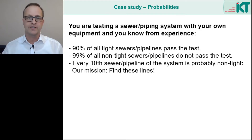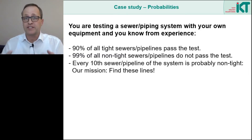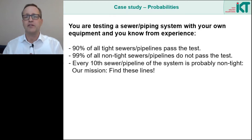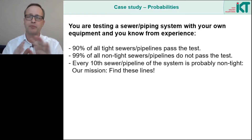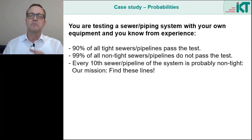Here comes the first example. Imagine the tester hands you the test result 'leaking' for a pipeline, and you want to assess how far you can trust this result. You think: the test circumstances are not simple — inserting a shutoff packer can sometimes go wrong, and who knows how the venting worked out. With a little goodwill, about 90% of tight sewers and pipelines will probably pass the test. The other way around, you are more confident: if a leaky pipe passes the test, the shutoff packer must really be sitting on a leak, which is very rare. So you estimate 99% of non-tight sewers will not pass the test.